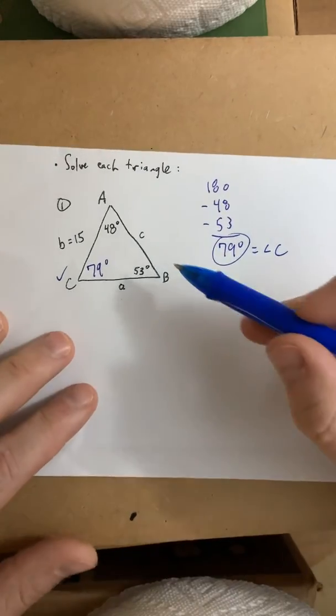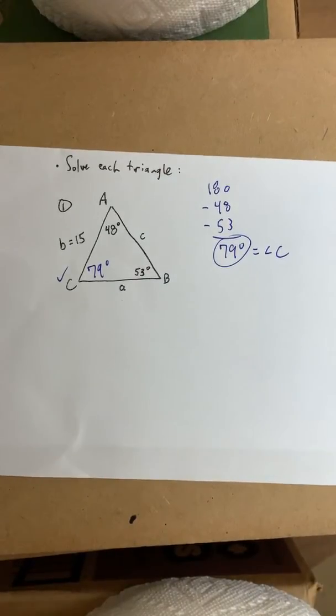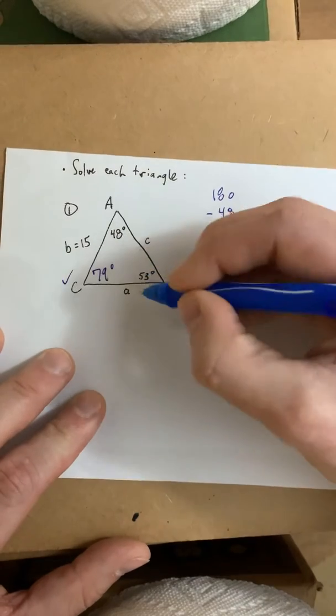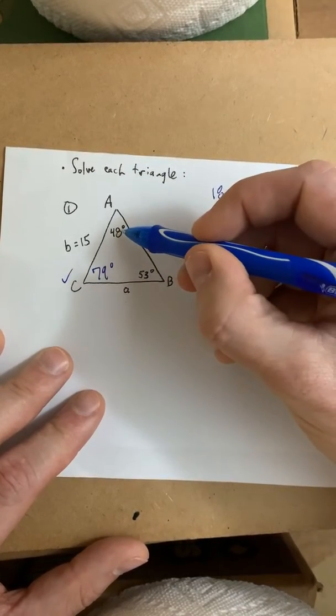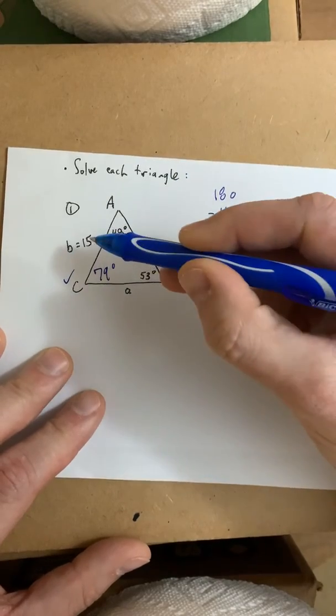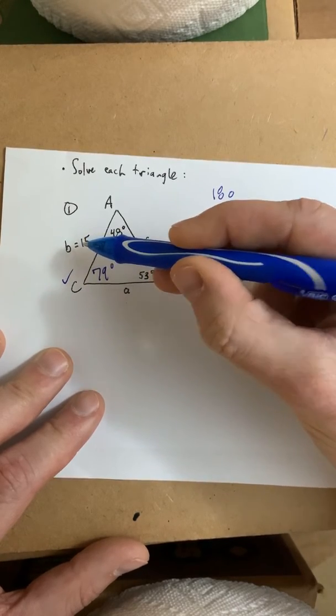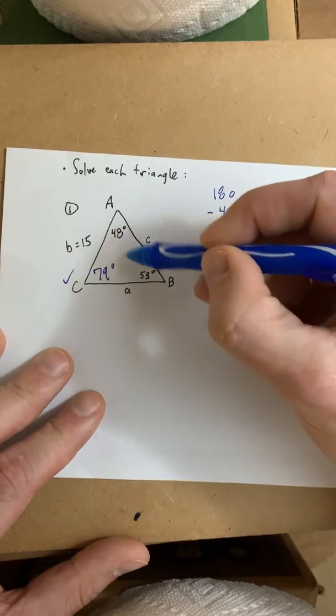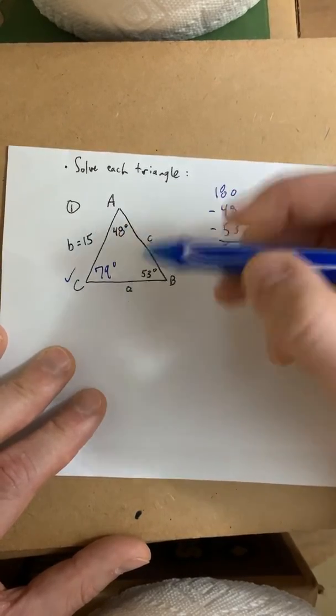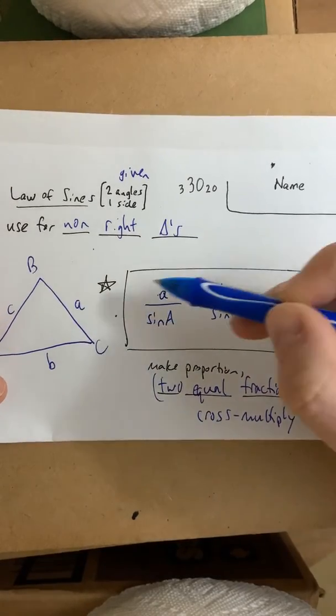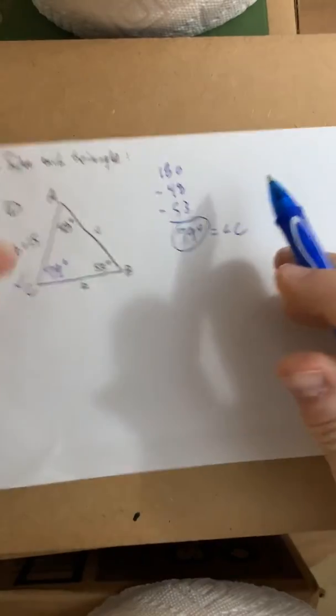All right, now we have to find the other two missing sides. It really does not matter which one you go for first. Okay? So, let's just go in alphabetical order. Let's go ahead and solve for A. Now, here is side A. And the angle across from it is 48. The other side and angle pair that you know that are opposite each other are side B at 15 and angle B at 53.